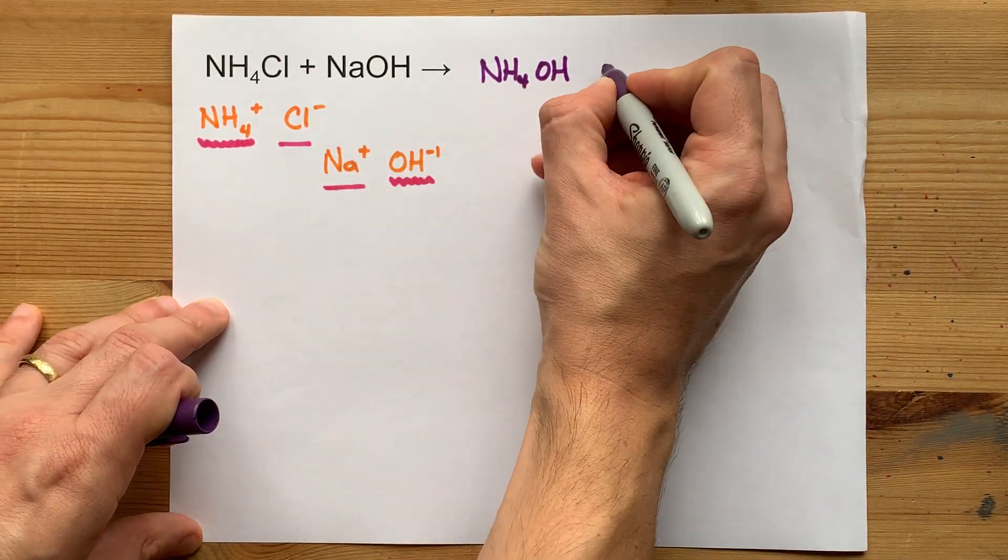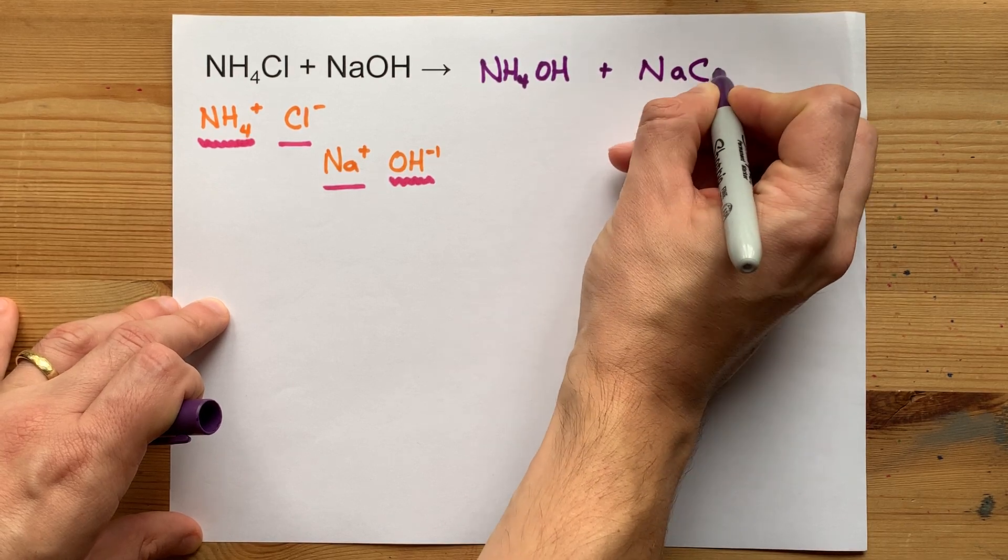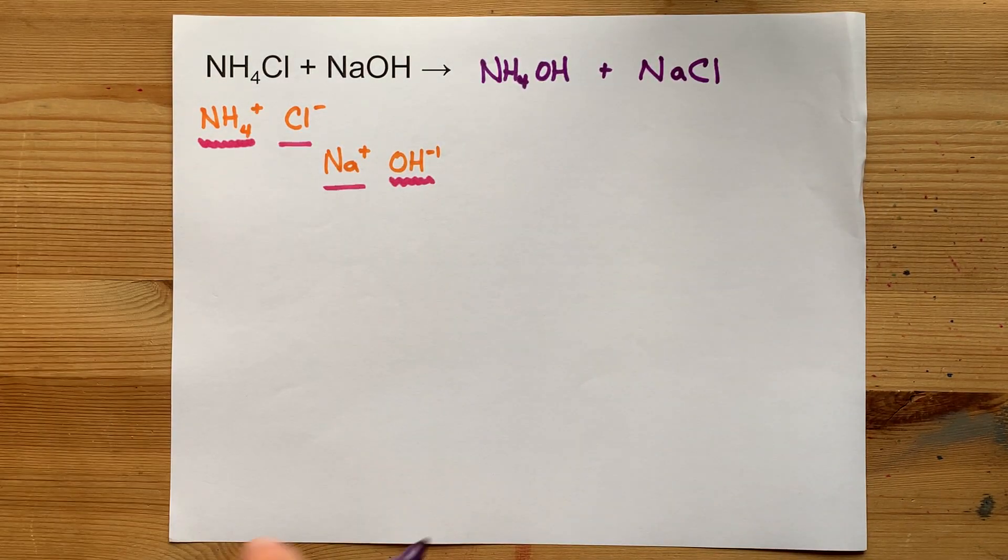And Na paired up with Cl, you probably already know as NaCl, because that's table salt and it's every teacher's favorite example.